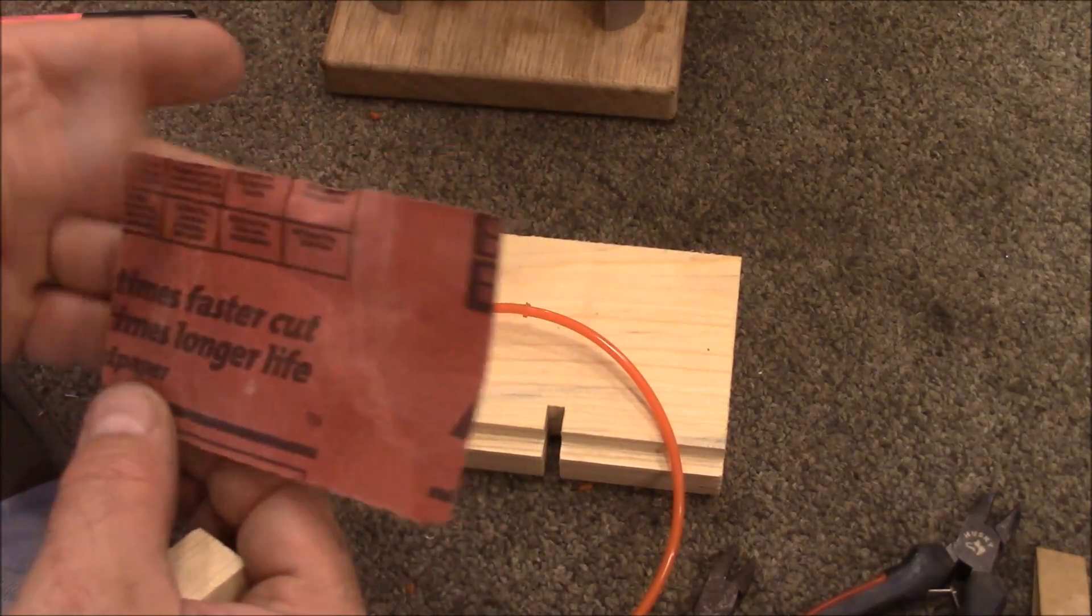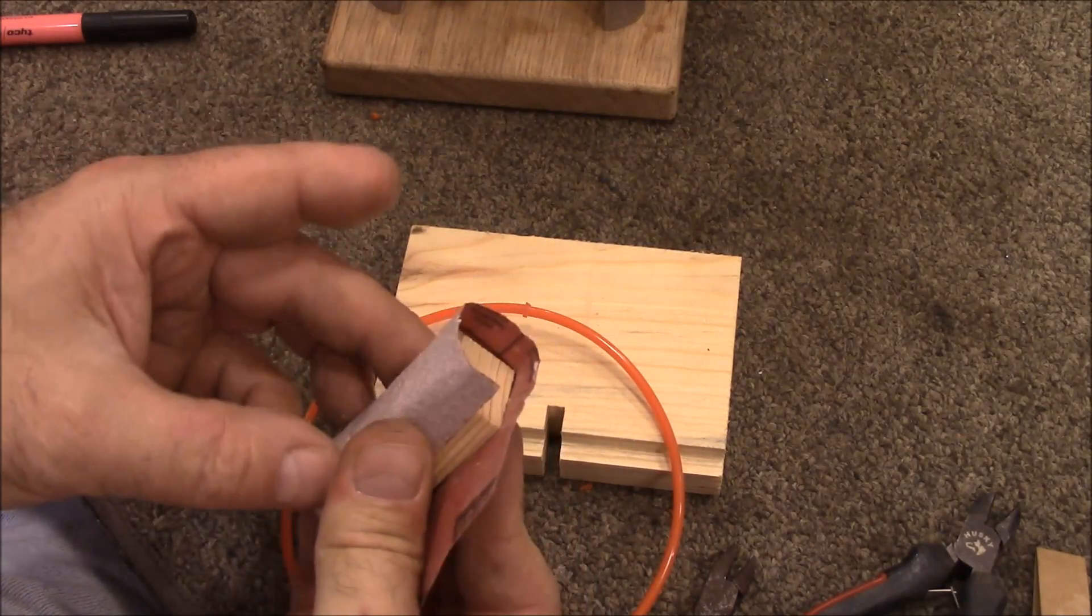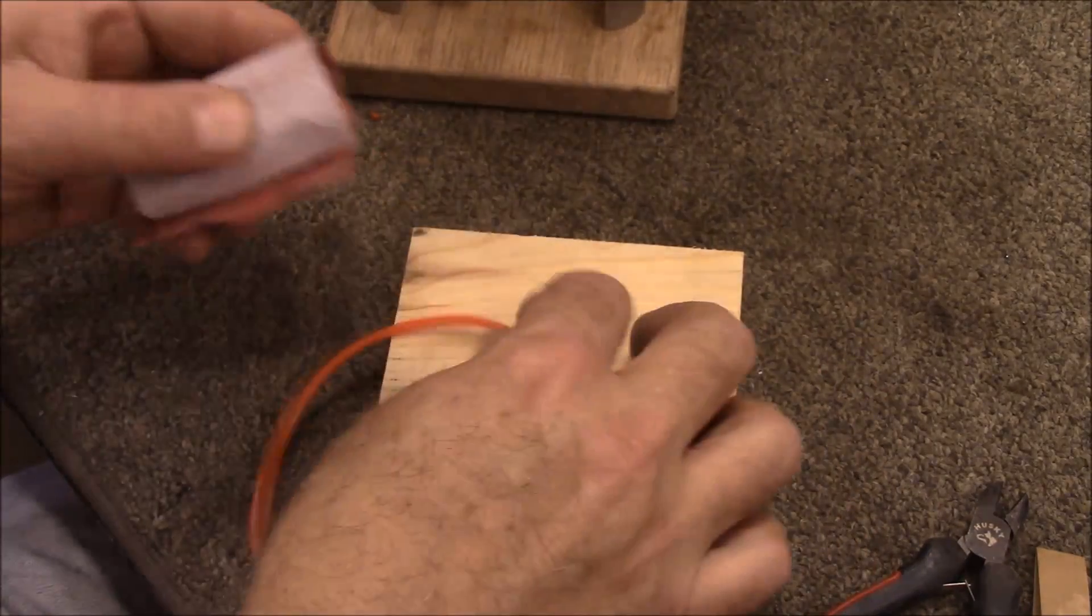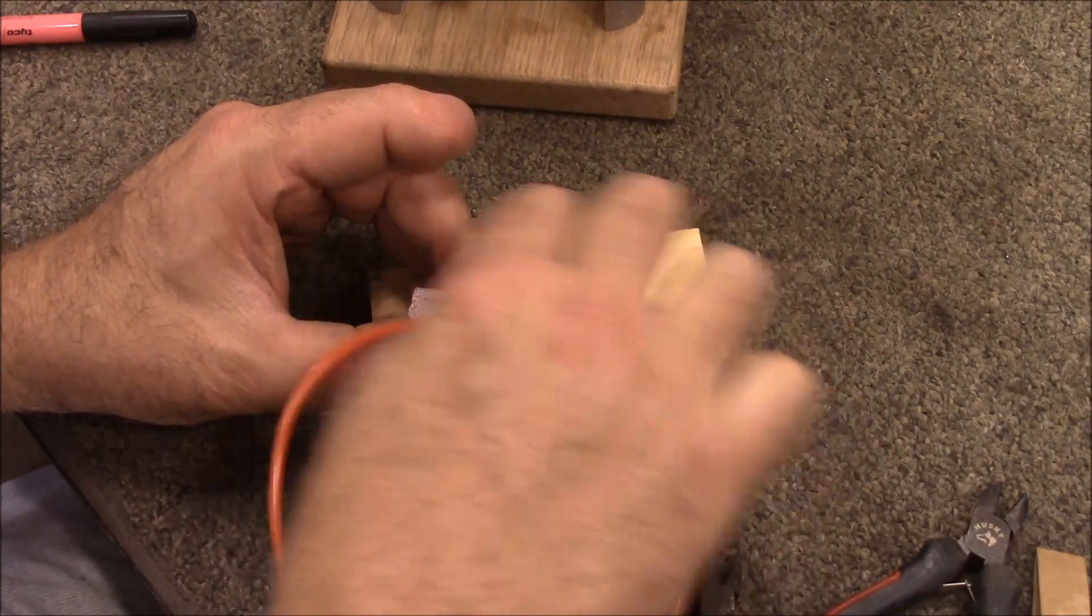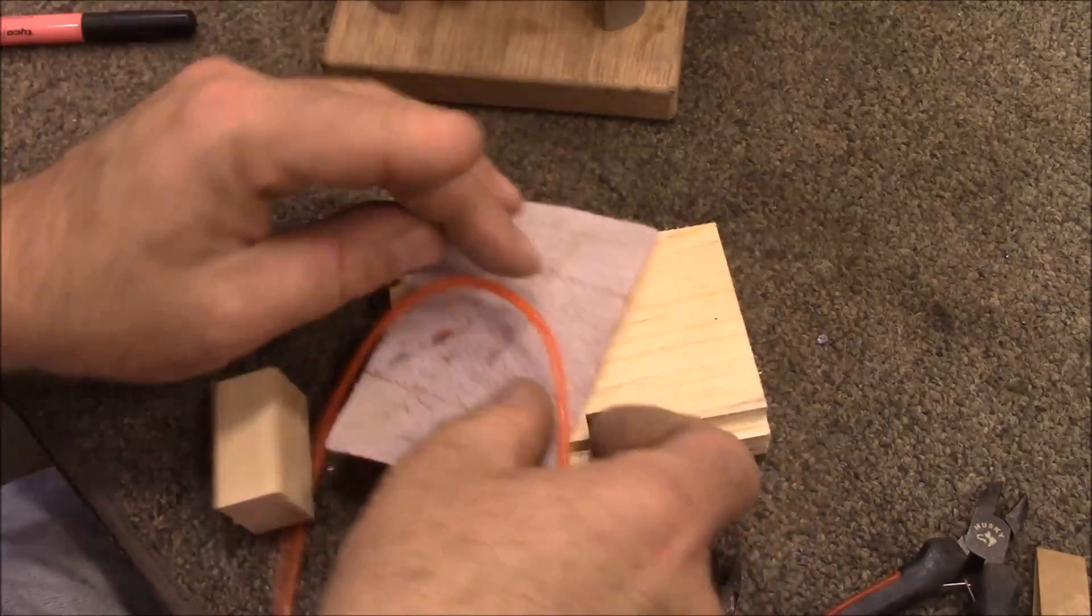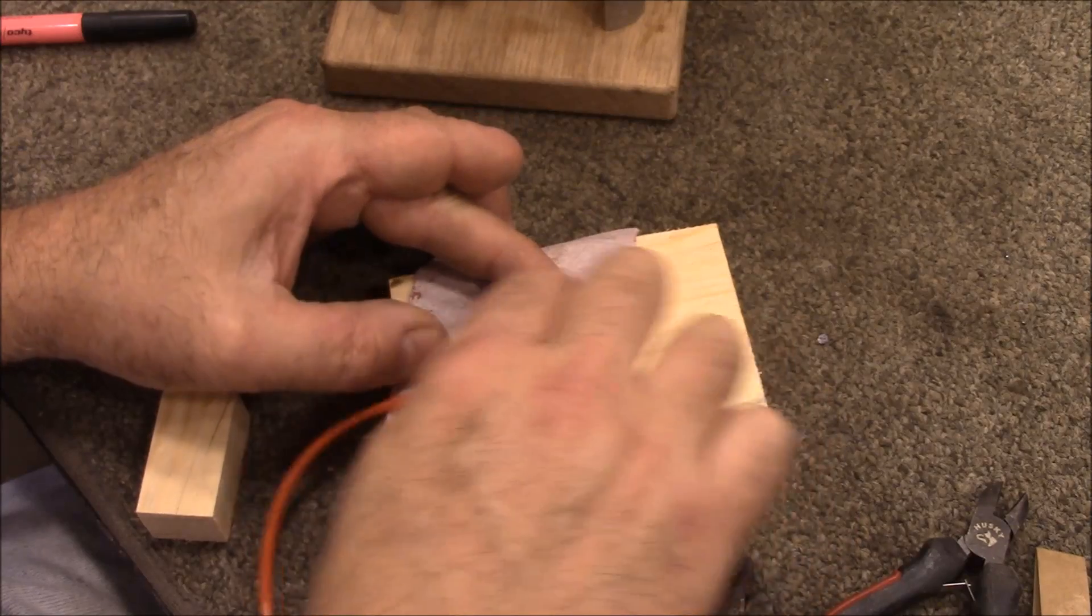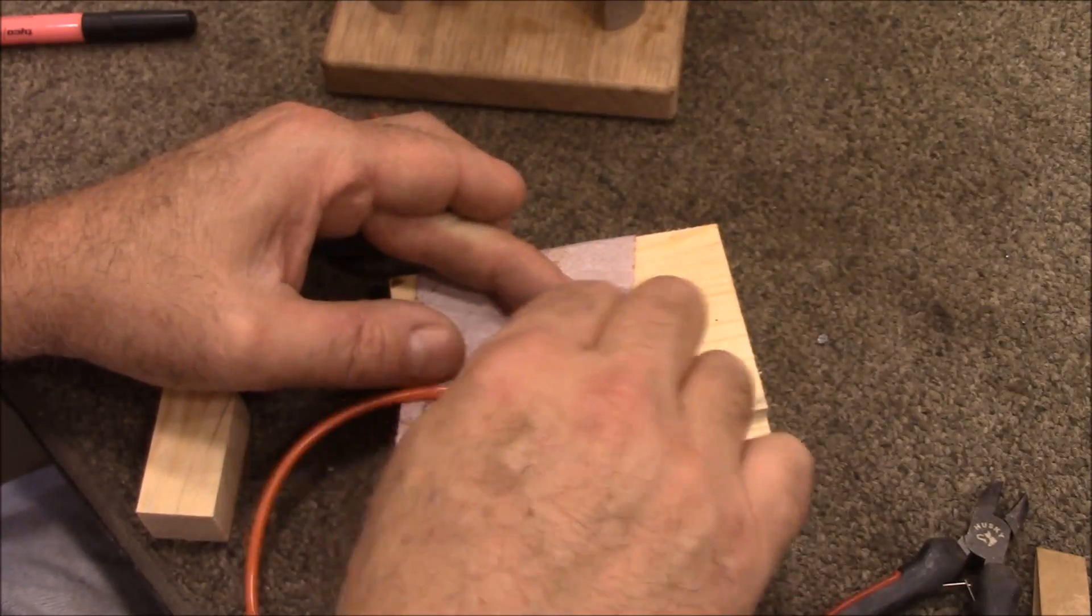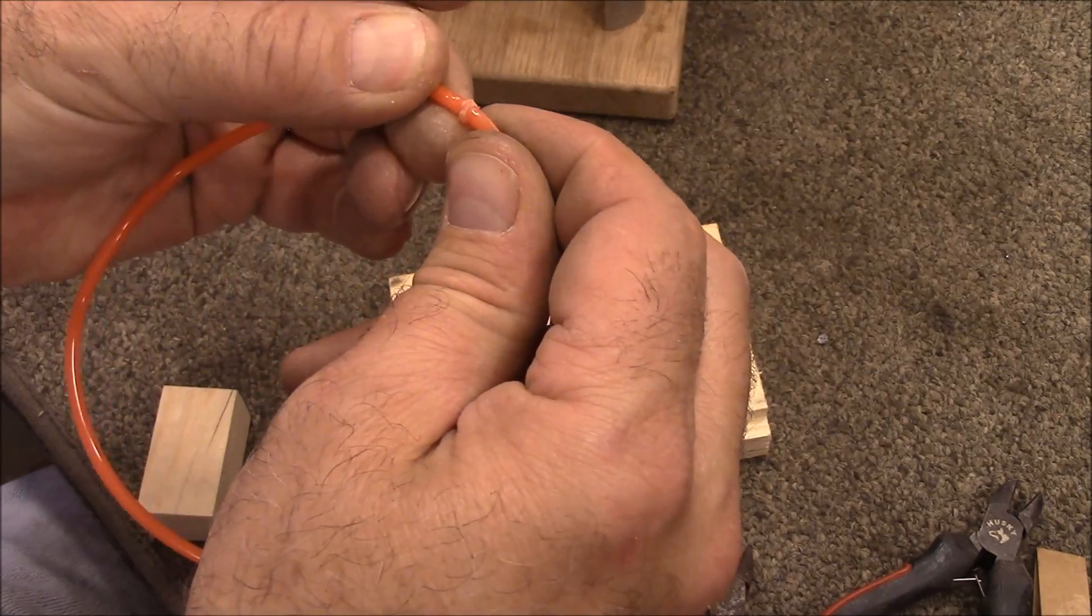Now this is some 120 grit sandpaper. It's been used before but all right. So now I'm just going to - well that doesn't work too good. Let's try this. That's working better. Just sand that off. I'll be back when I get that done.